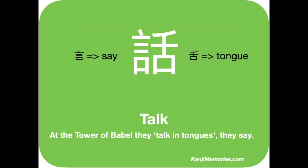We start with the green Kanji Memories card, which shows just two elements. If you are not already familiar with them, then perhaps view our videos for them first. On the left is the element that signifies saying something; on the right is the symbol for tongue. Technically the right-hand side has a different origin than the tongue symbol, but as it looks like the symbol for tongue, that is what we will call it.